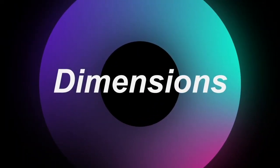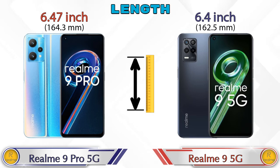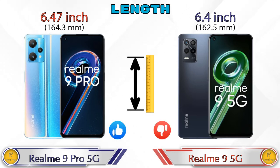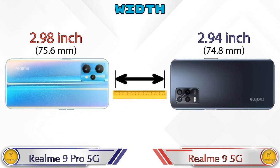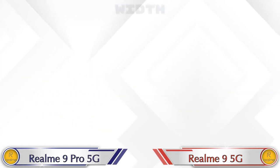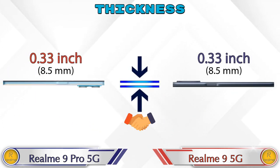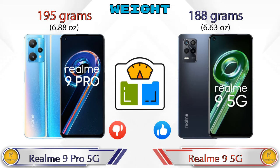Now let's check the dimensions. The Realme 9 Pro 5G has a length of 6.47 inches, while the Realme 9 5G is 6.4 inches. Width: the Realme 9 Pro 5G is 2.48 inches and the Realme 9 5G is 2.94 inches. Both phones share the same 0.33 inch thickness. In terms of weight, the Realme 9 Pro 5G is 195 grams and the Realme 9 5G is 188 grams.